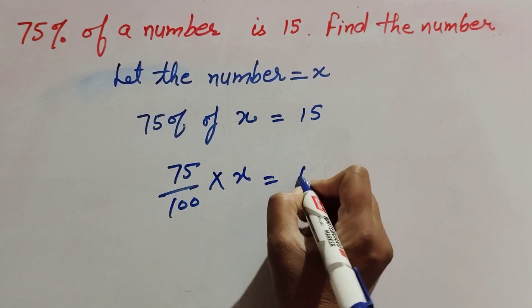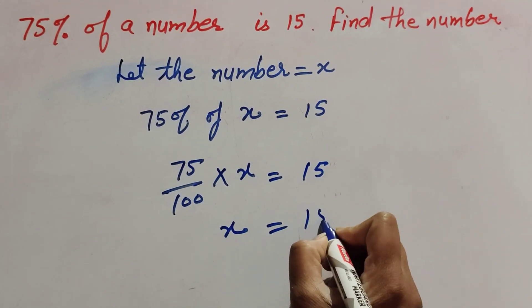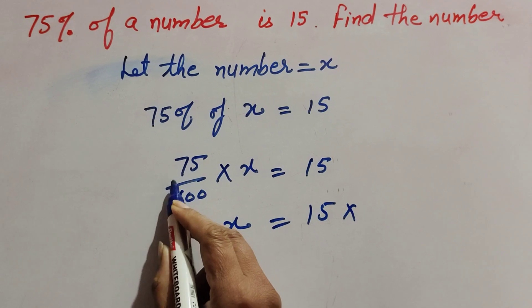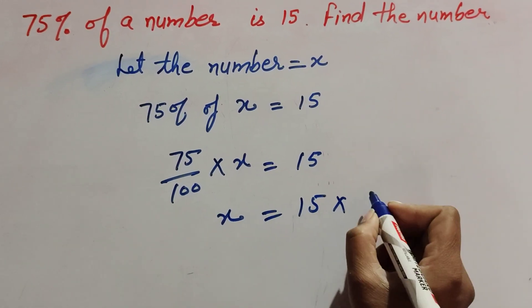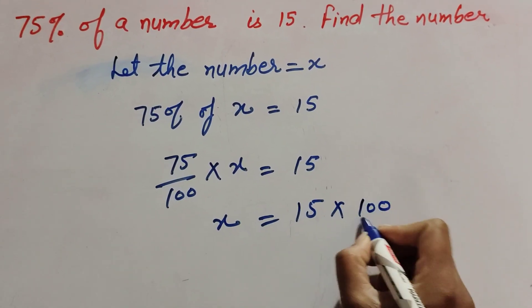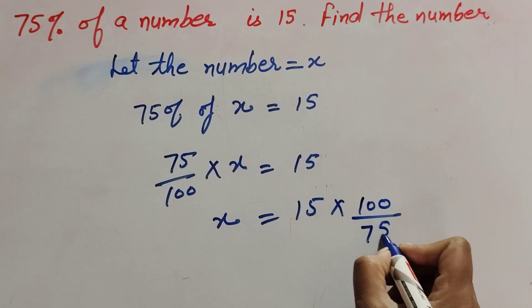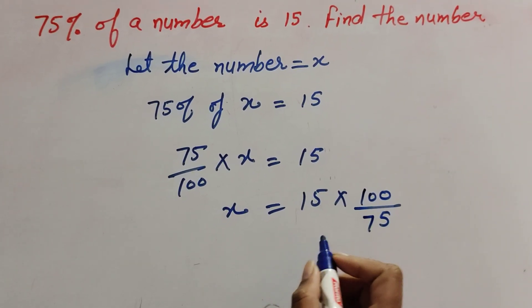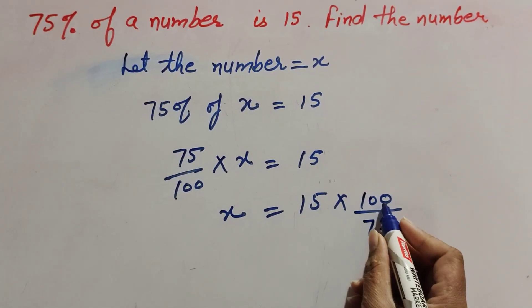So x is equal to 15 multiplied by... when we transpose 75 over 100 to the right hand side, we take its reciprocal, which is 100 over 75. So 15 multiply 100 over 75.